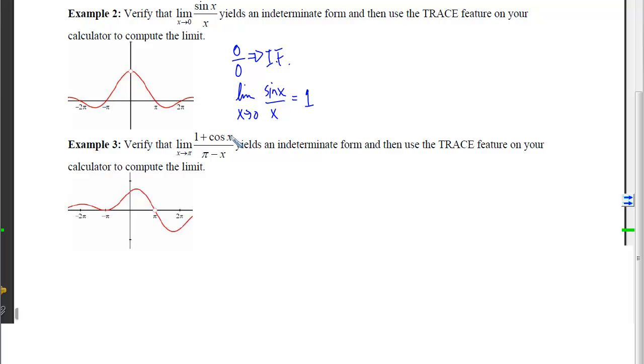Here again on example 3, I'm going to plug pi in. On the top, I'll get 1 plus the cosine of pi, which is 1 minus 1, which is 0 on the top. And pi minus pi gives me 0 on the bottom. Again, I've got that indeterminate form.